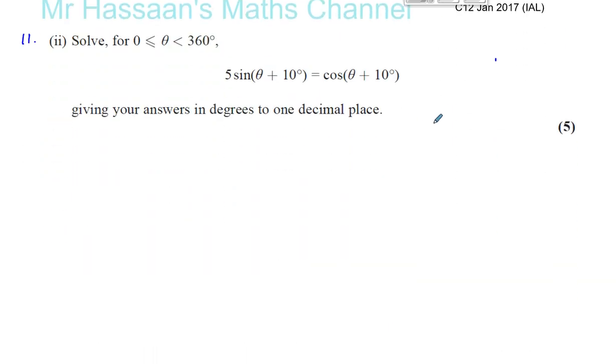Now, 11 part 2. We've got to solve this equation for theta between 0 and 360 degrees. So we must make sure our calculator is in degree mode. It was in radian mode for part 1, it must be in degree mode for part 2.